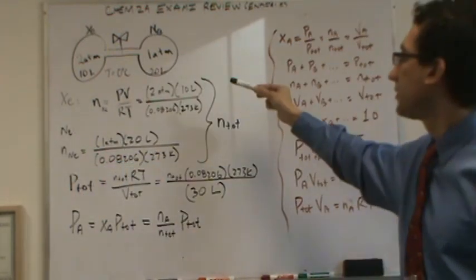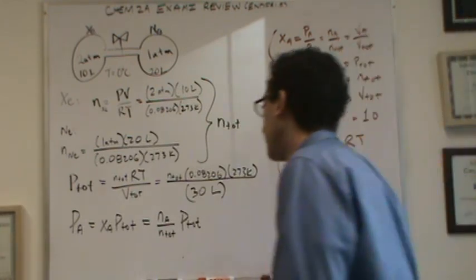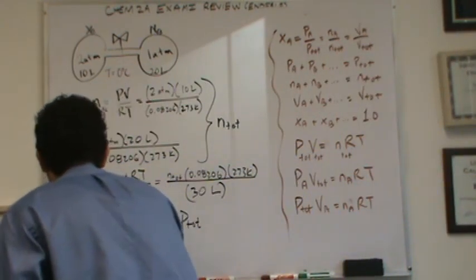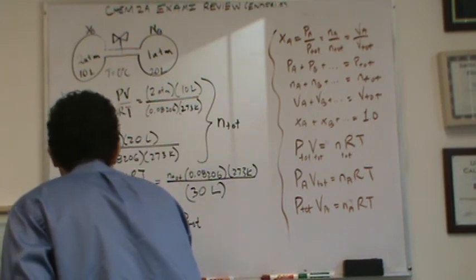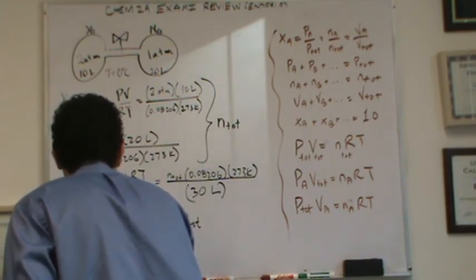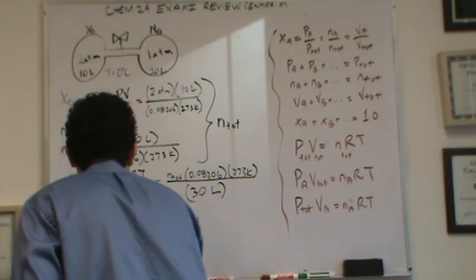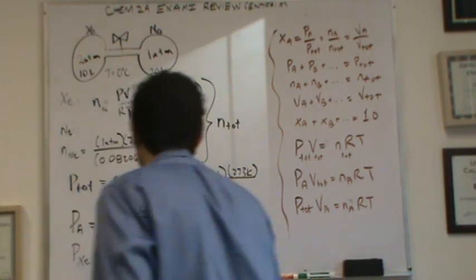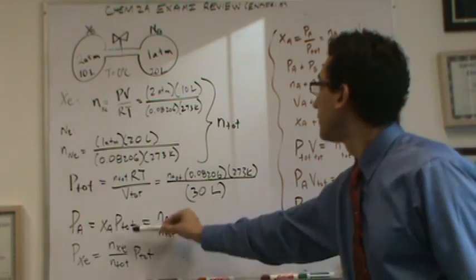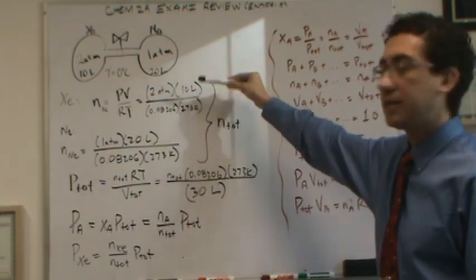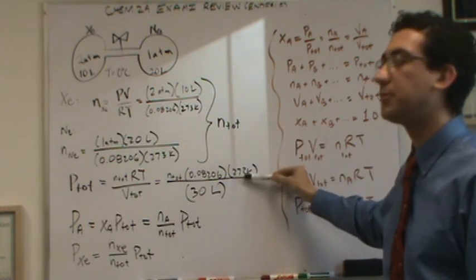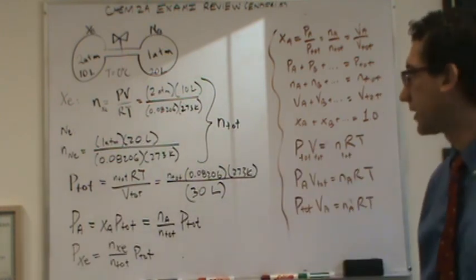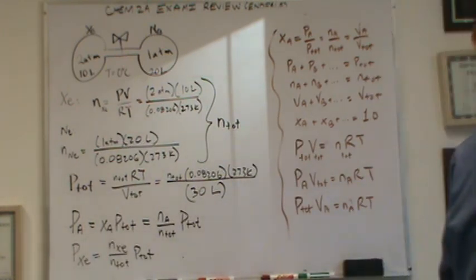So let's say I wanted P of xenon, it would be the moles of xenon over the total moles times the total pressure. So the moles of xenon is going to be this number right here, the total moles is going to be this number right here, and P total will be this number right here. And figure that out.